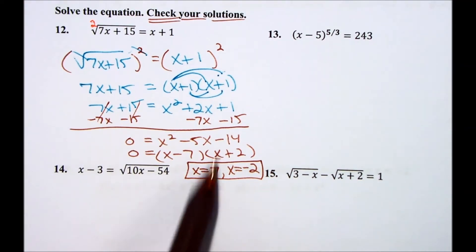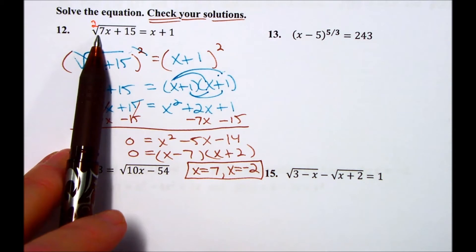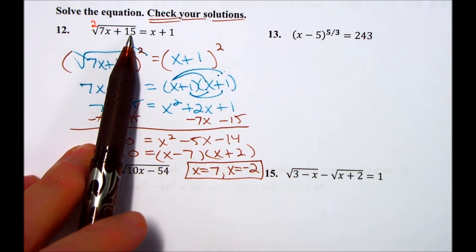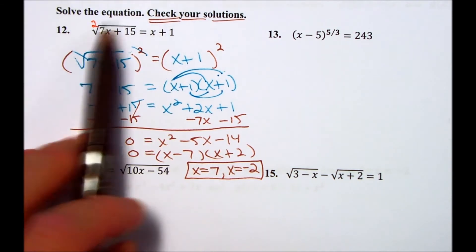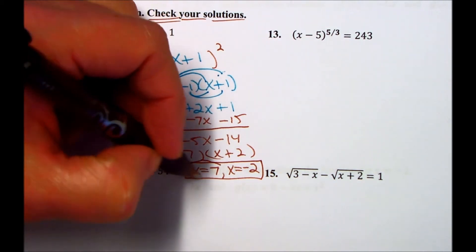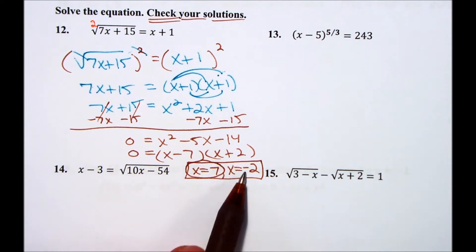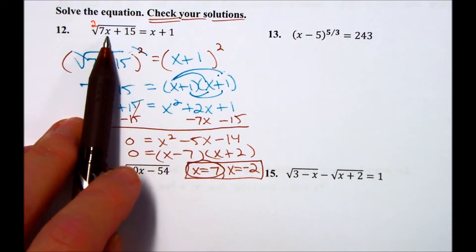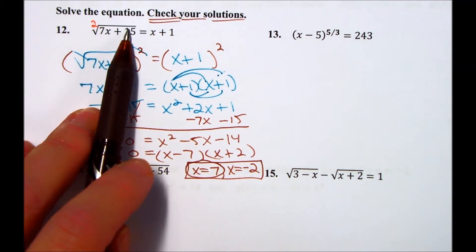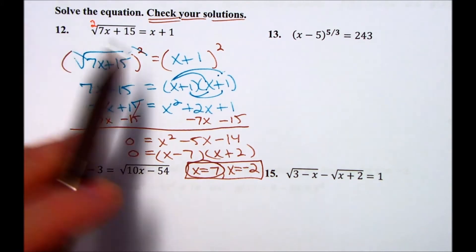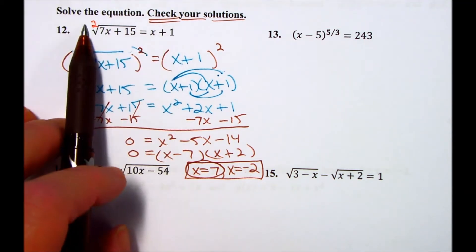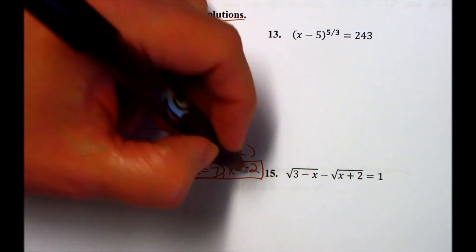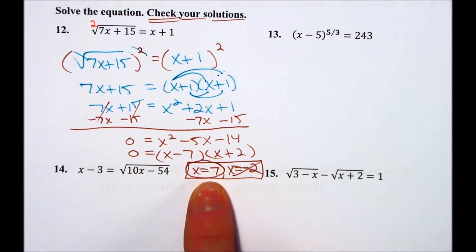With radical equations, you need to check your solutions for extraneous roots — substitute back into the original equation. If I put 7 in: 7 times 7 is 49, plus 15 is 64; and 7 + 1 = 8. Is √64 = 8? Yes. So x = 7 works. If I put −2 in: 7 times −2 is −14, plus 15 is 1, and √1 = 1. But −2 + 1 = −1. In radical equations, the even root cannot equal a negative number. So −2 is extraneous, and x = 7 is the only solution.